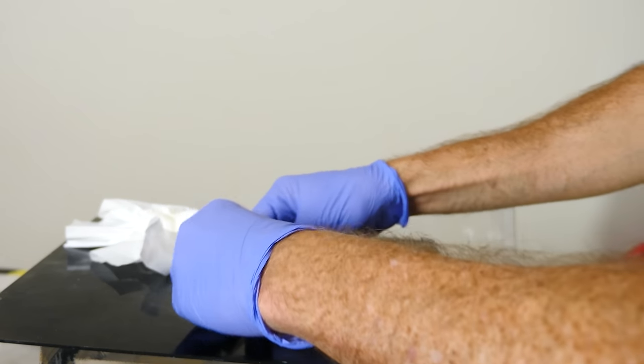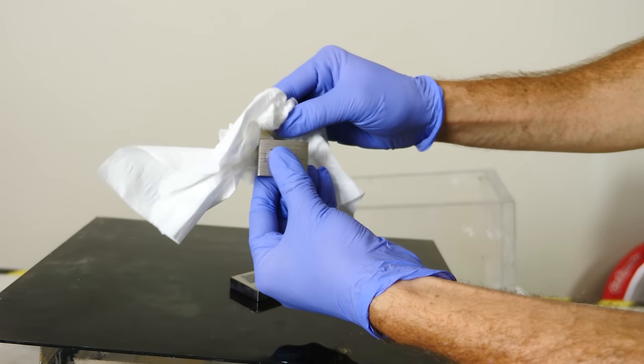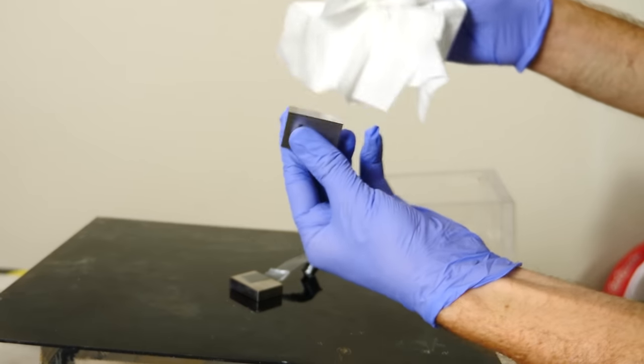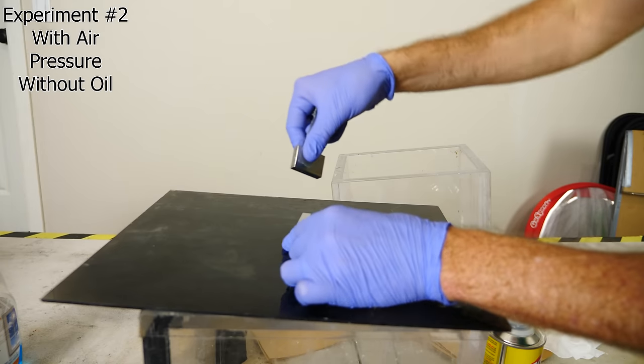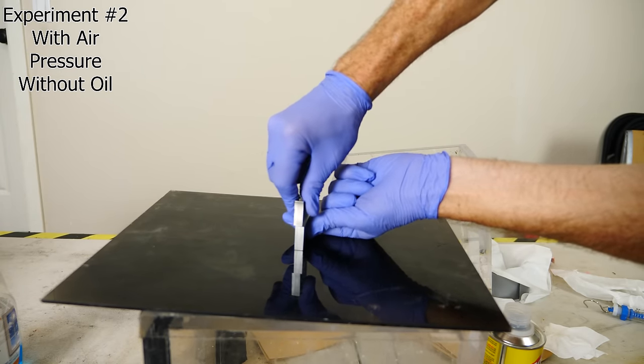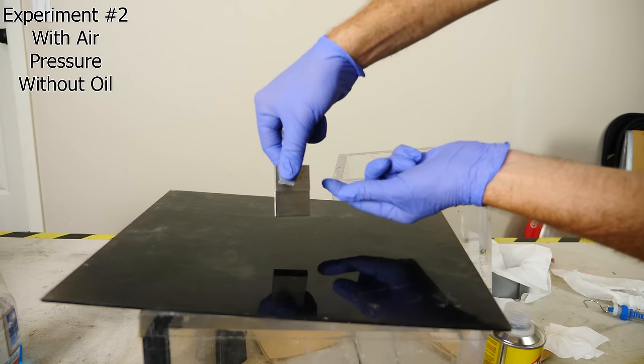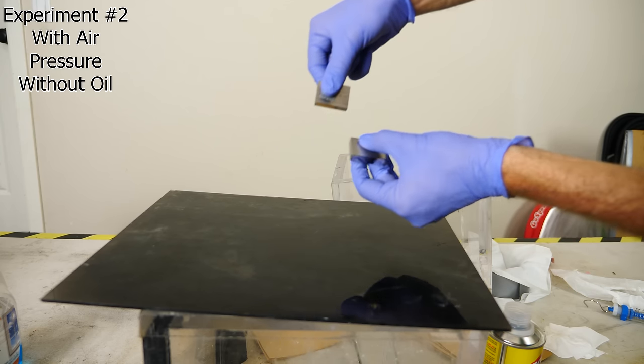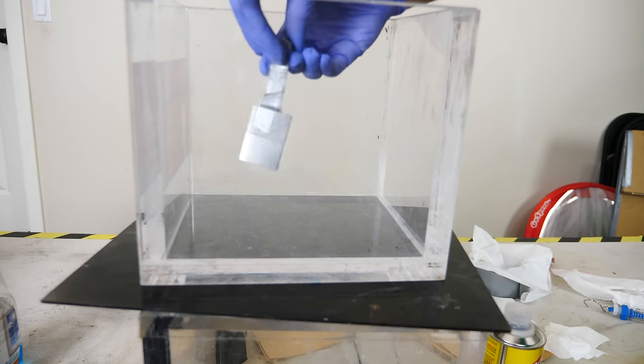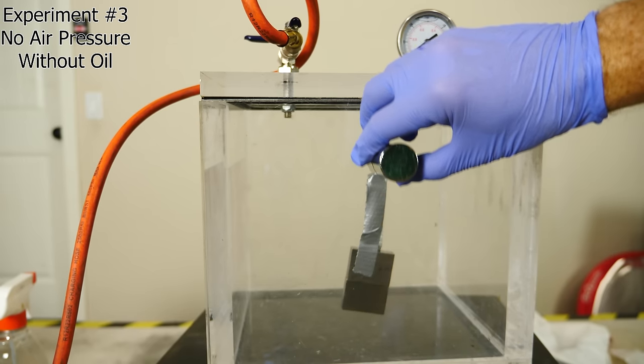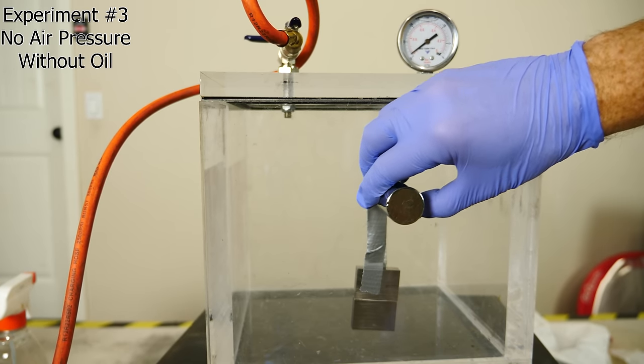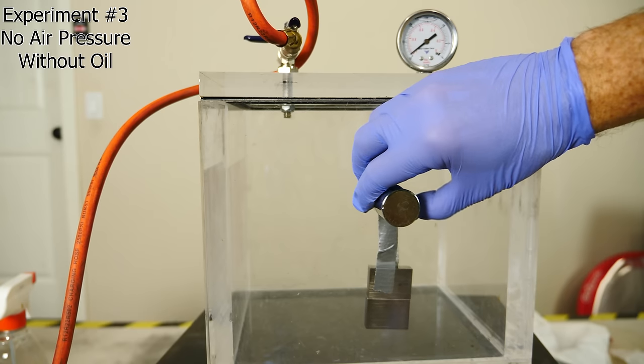Now we're going to remove the oil from the gauge block, so it's a completely smooth, clean surface with no oil on them. And let's see if they can stay rung in the vacuum chamber. So once I've cleaned the surface and removed the oil, I can already tell it's a lot harder to wring them together. You can still do it, but it's really hard. So they're still wrung together in there with no oil under a full vacuum.